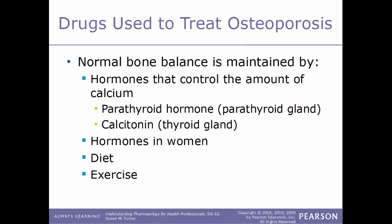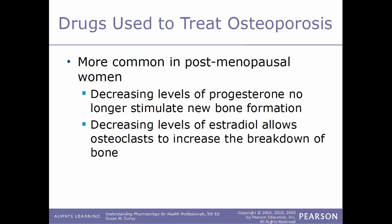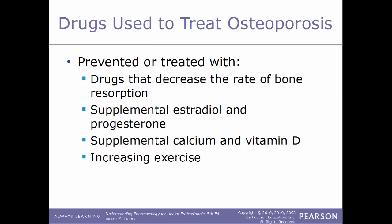This normal bone balance is maintained by hormones that control calcium levels, including parathyroid hormone from the parathyroid gland and calcitonin from the thyroid gland. Other factors include various female hormones, diet, and exercise — exercise builds not only stronger muscles but also stronger bones. Osteoporosis is the thinning of bone at the cellular level. Risk factors include being Caucasian or Asian race, having a slender build, smoking, alcohol use, and lack of exercise. The most well-known risk factor is being a postmenopausal woman, as decreasing progesterone levels no longer stimulate new bone formation, and decreasing estradiol allows osteoclasts to increase bone breakdown.